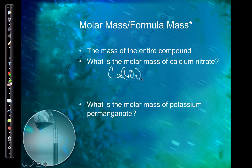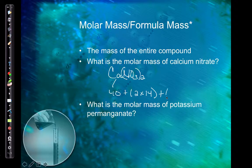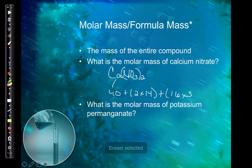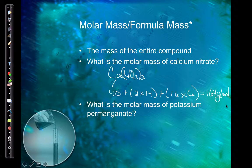Calcium nitrate: the mass of calcium is about 40 grams, plus the mass of 2 nitrogen atoms — so everything gets multiplied by 2 — multiplied by the mass of nitrogen, which is 14, plus the mass of 6 oxygen atoms, because everything gets multiplied by the 2 on the outside. So we get about 164 grams per mole. If I weigh 164 grams, I have one mole of calcium nitrate.